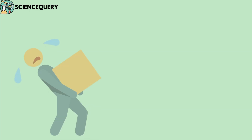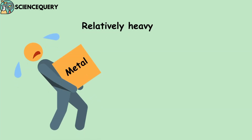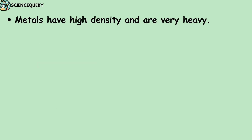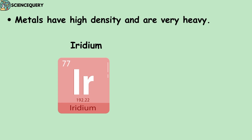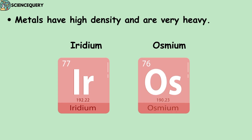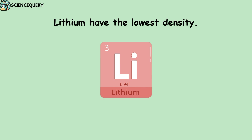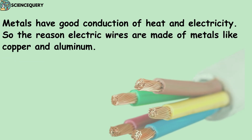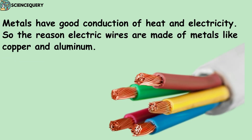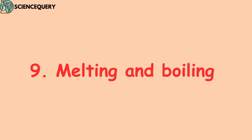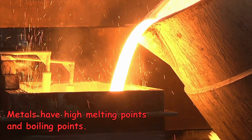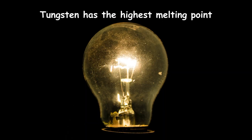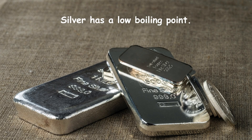Another property of metal is density. Metals are relatively heavy in nature and have high density. Iridium and osmium have the highest density among all metals, while lithium has the lowest density. The next important property is conduction — metals are good conductors of heat and electricity. Electric wires are made of metals like copper and aluminum. Metals also have high melting points and high boiling points. For example, tungsten has the highest melting point and silver has the lowest boiling point.